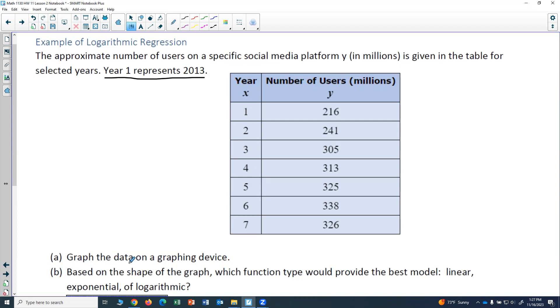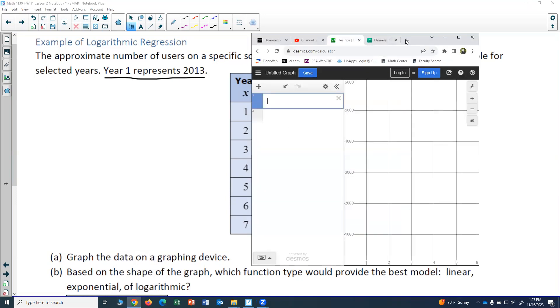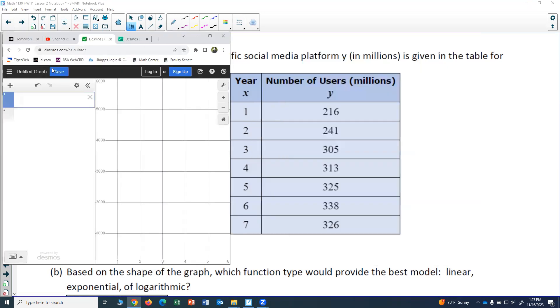So the first task is graph the data on a graphing device. Since I'm using Desmos, I want to open up Desmos here and I'll pull it over to the left so I can see the table and my data at the same time. I'm going to hit the plus button and enter a table.